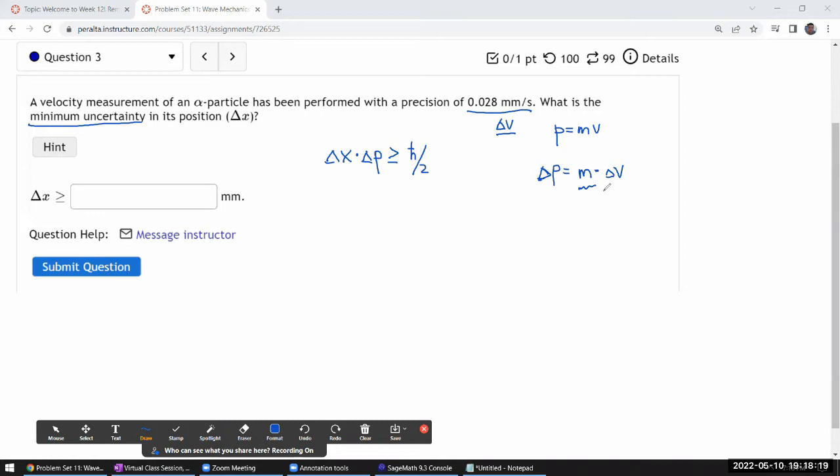So I think we can treat the uncertainty in momentum as given, then solving this for uncertainty in position and dividing both sides by delta P, which is a positive quantity, so the inequality doesn't change. So delta X is greater than or equal to h bar over two times one over delta P.